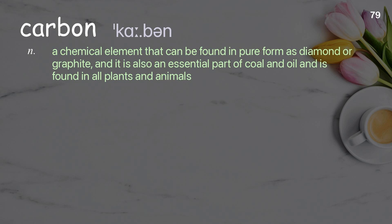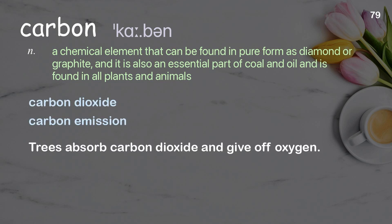Carbon: a chemical element that can be found in pure form as diamond or graphite, and is also an essential part of coal and oil and is found in all plants and animals. Examples: carbon dioxide, carbon emission. Trees absorb carbon dioxide and give off oxygen.